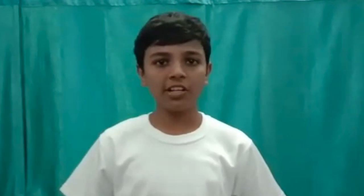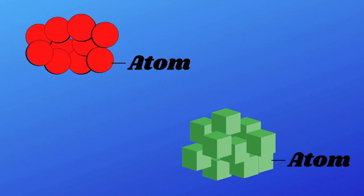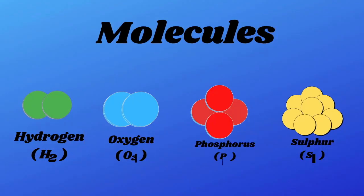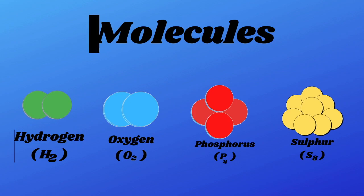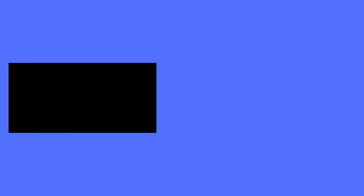Coming to the next point: elements cannot be separated by physical or chemical means. Elements are made of tiny particles called atoms. Atoms of an element are alike and they combine to form bigger particles called molecules. Atoms of an element cannot exist freely in nature, while molecules of an element can. For example, a hydrogen molecule is made up of two atoms of hydrogen, so the formula is H₂. Sulfur is made up of eight atoms. Some elements can exist as atoms — they are called monatomic molecules. They are xenon, krypton, neon, and helium.